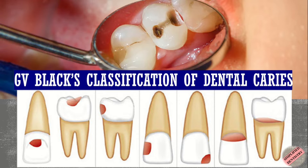There are many different classifications of dental caries but the most widely accepted is the GB Black's classification. I have already made a video on the different ways in which a caries lesion can be classified, and if you want to know about other classifications you can watch that video — I'll mention its link in the description box.